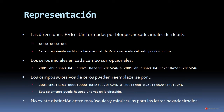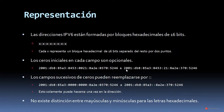Comenzamos con la representación de las direcciones IPv6. Las direcciones IPv6 están formadas por bloques hexadecimales de 16 bits. Cada bloque hexadecimal de 16 bits está separado del resto por dos puntos: un bloque, dos puntos, un bloque, dos puntos. Vamos a tener cuatro elementos hexadecimales — números y letras. Los ceros iniciales en cada campo son opcionales.